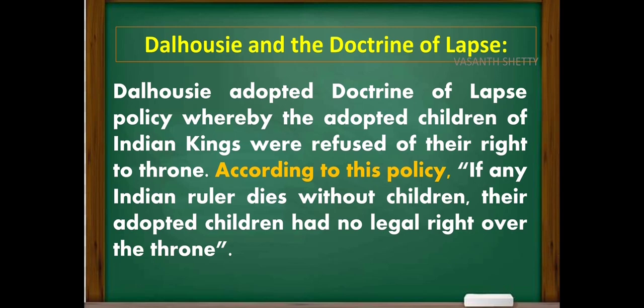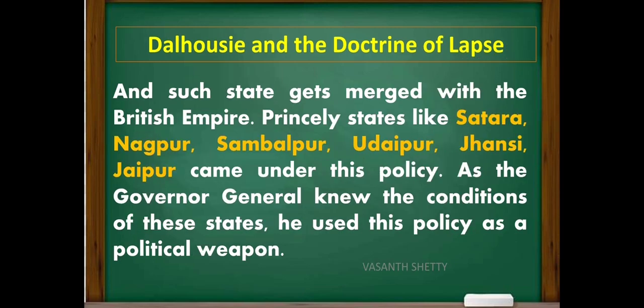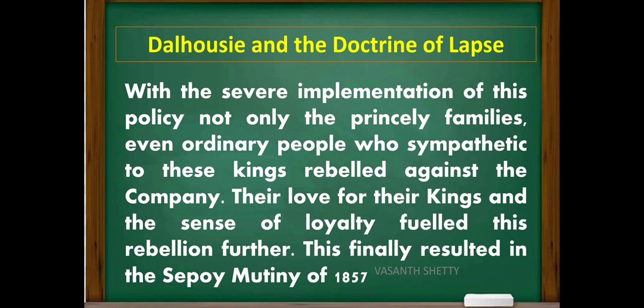Lord Dalhousie adopted the Doctrine of Lapse policy, whereby the adopted children of Indian kings were denied their right to the throne. According to this policy, if any Indian ruler died without children, their adopted children had no legal right over the throne and the state would be merged with the British Empire. Princely states like Satara, Nagpur, Sambalpur, Udaipur, Jhansi, and Jaipur came under this policy. With severe implementation of this policy, not only the princely families, but even ordinary people sympathetic to these kings rebelled against the company. Their love for their kings and sense of loyalty fueled this rebellion, which finally resulted in the Sepoy Mutiny of 1857.